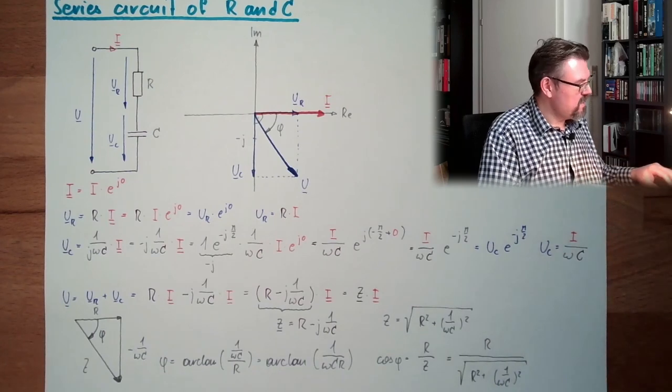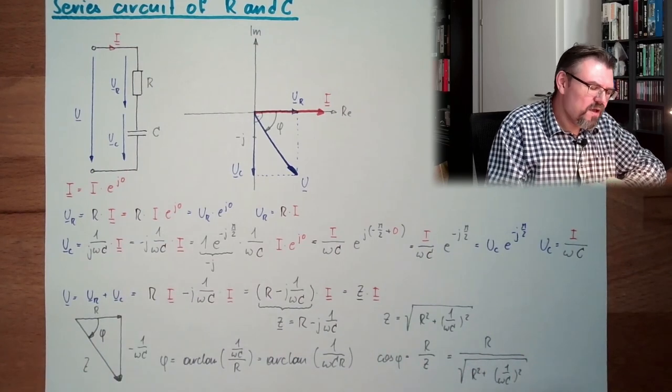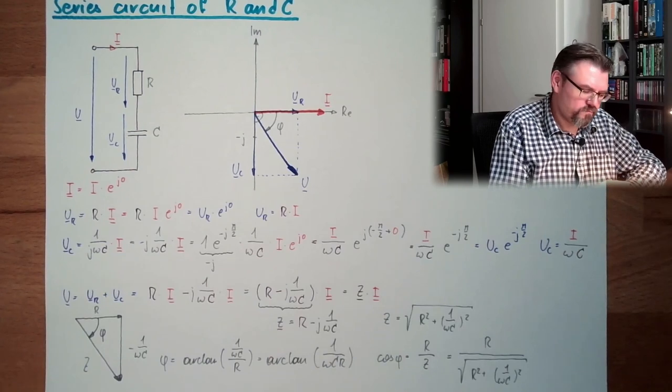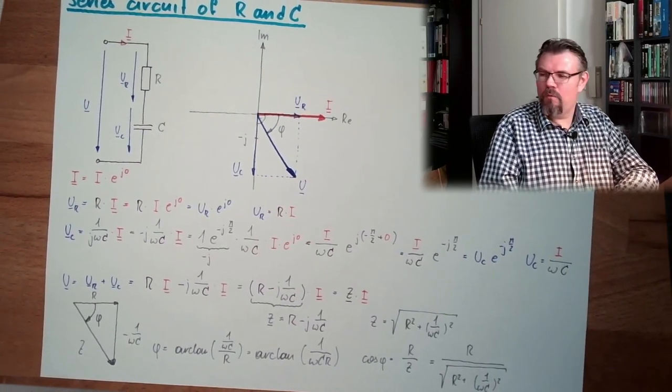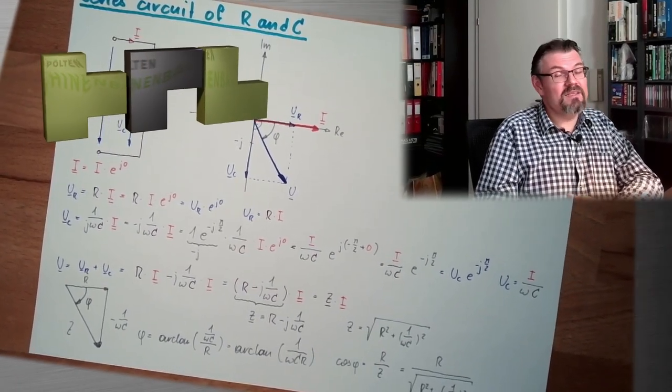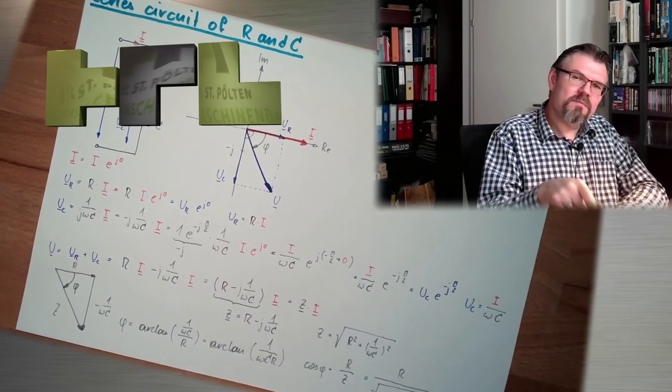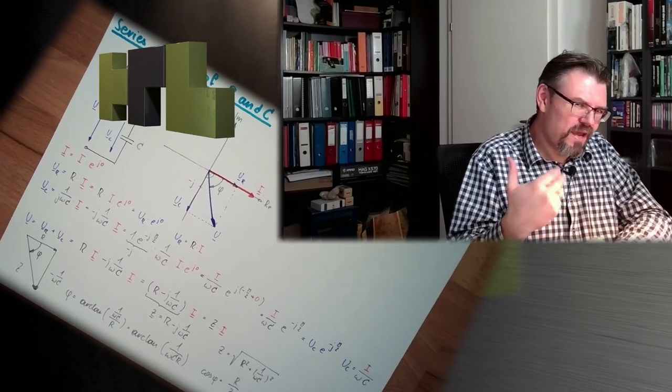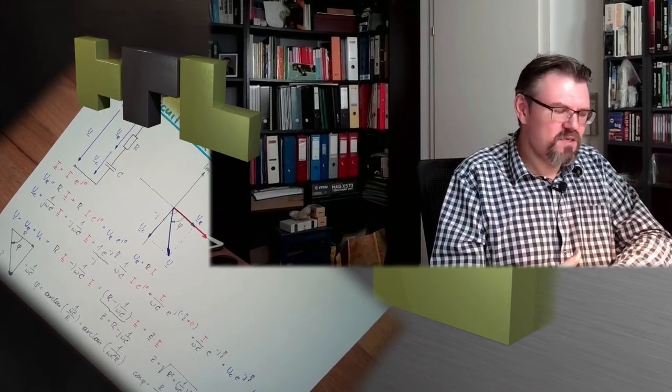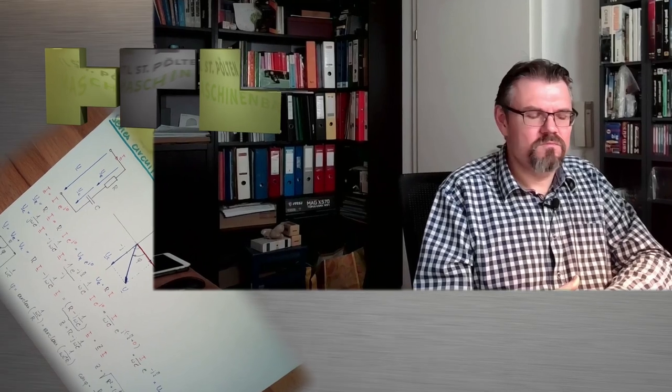You see, series circuit of R and C was a little bit more tricky, I think, because with this minus j here and so on, a little bit more tricky than R and L. But, I think it was pretty nice, pretty you could follow. Well, so now we had a series connection of R and L and a series connection of R and C. And so, oh, they are behaving different, right? So, one time this φ is positive in inductive case, and in capacitive case, it's negative. What is happening if we are making a series circuit of R, C and L? So, what if we do both? What happens then? This we will have a look in the next video. Next video, series circuit of R, L and C. For this time, thank you very much for listening. Goodbye.